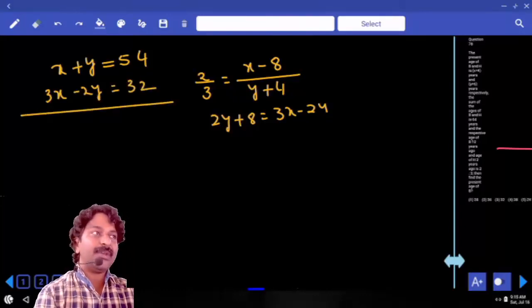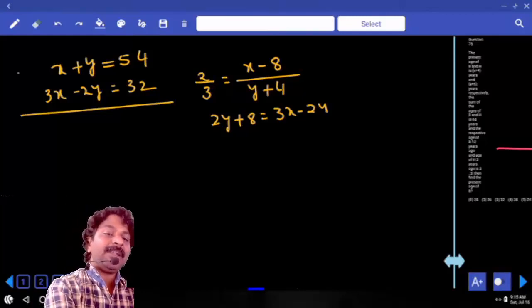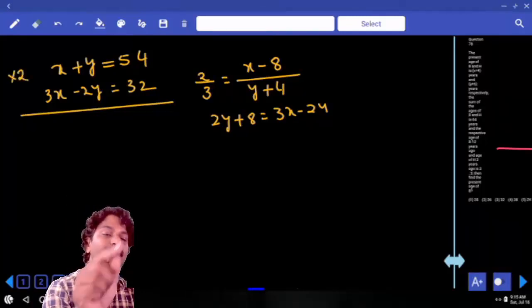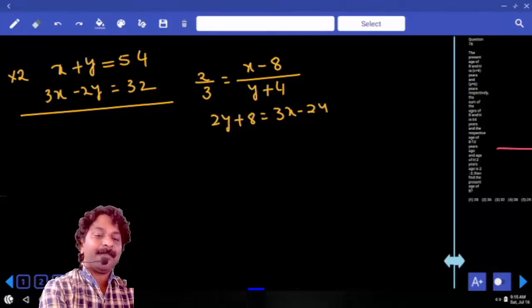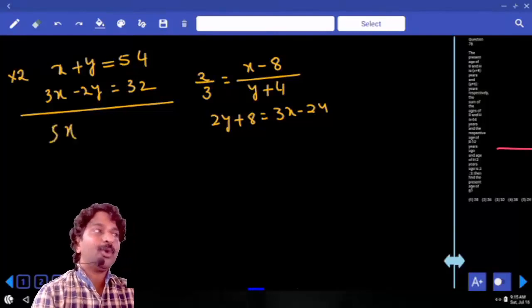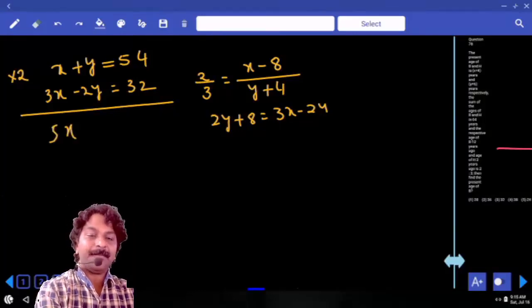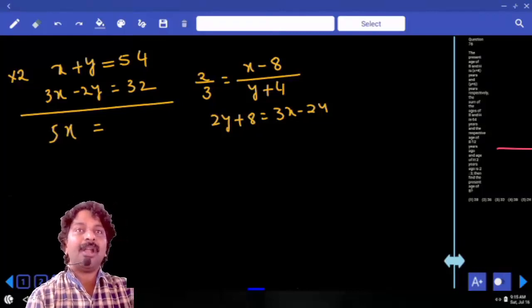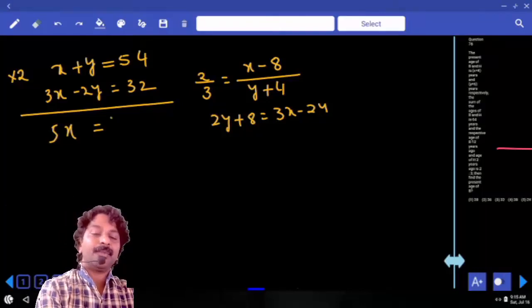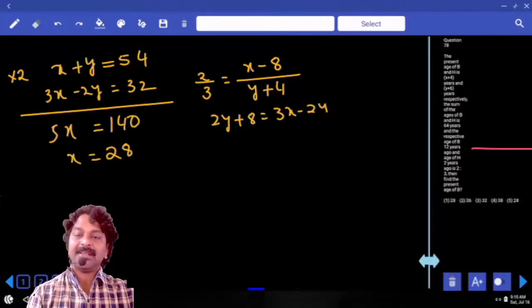Using these two equations we need to solve and get the value of x. Multiply the first equation with 2. 2x plus 3x is equal to 5x. 2y minus 2y cancel. 54 times 2 plus 32, 140. x is equal to 28. x is equal to 28.